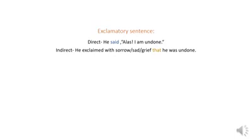In exclamatory sentences, you can write down 'exclaimed with sorrow,' 'sad,' 'grief,' 'delight,' etc., instead of the reporting verb 'said,' depending on the meaning of the reported speech. Look at the example: He said, 'Alas! I am undone.' Indirect: He exclaimed with sorrow/sadness/grief that he was undone.